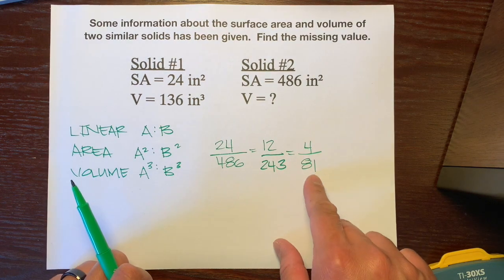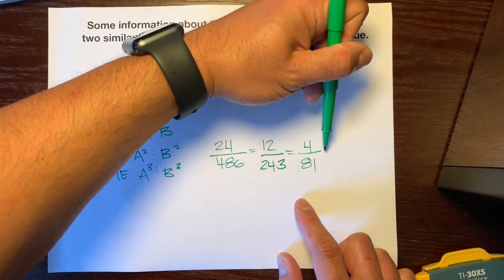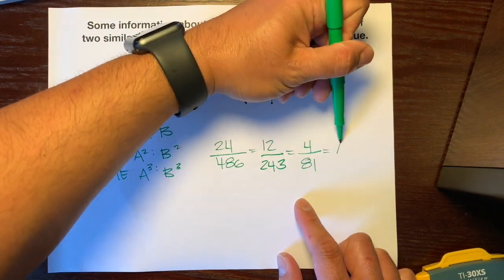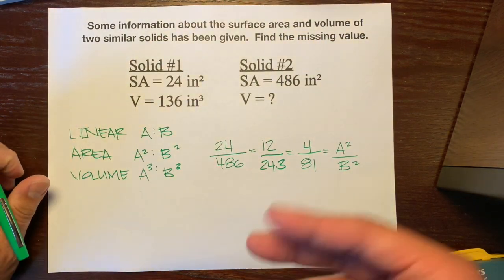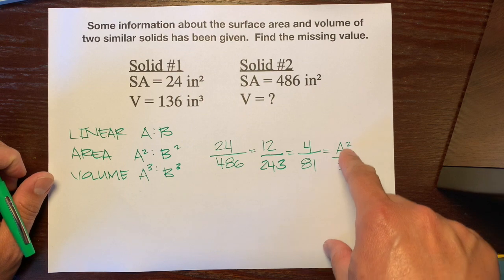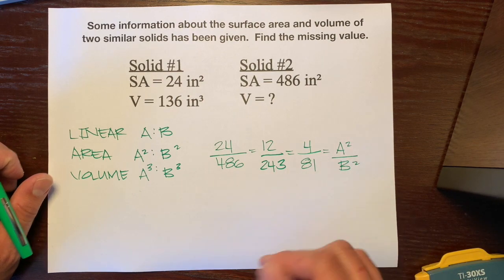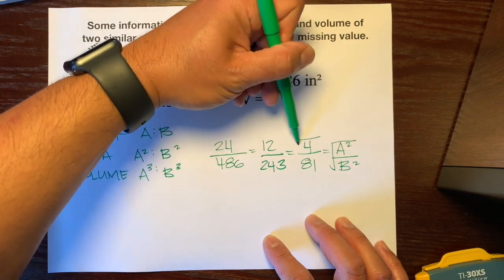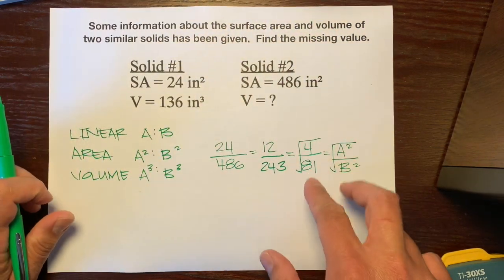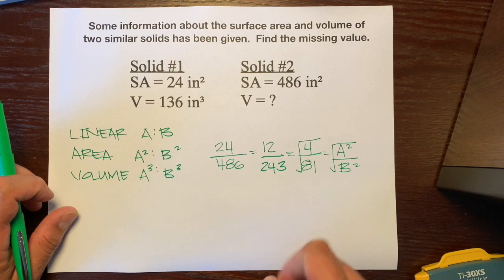So, we're going to set this 4 over 81 equals to A squared over B squared. And what we want to do is to get this to A over B. So, the opposite of squaring something is square rooting. So, we're going to square root both sides in order to get the linear scale factor.